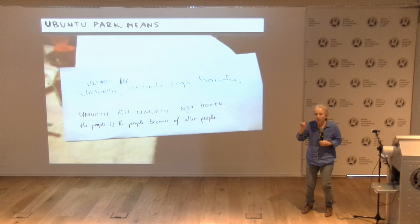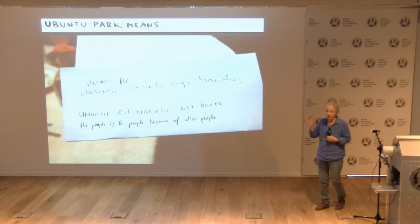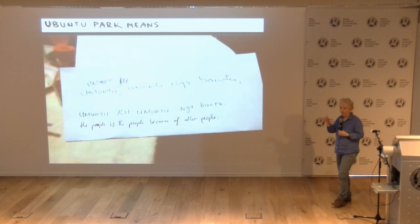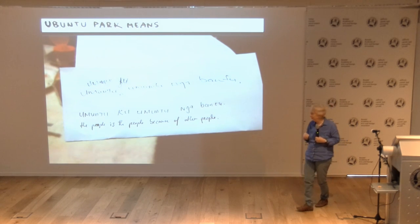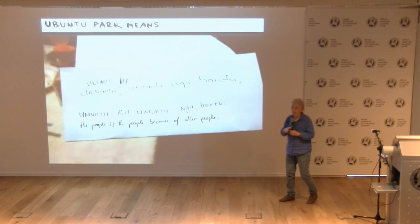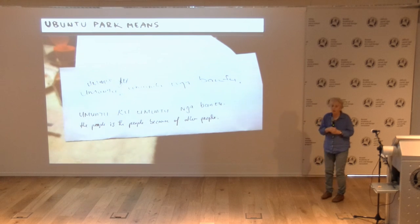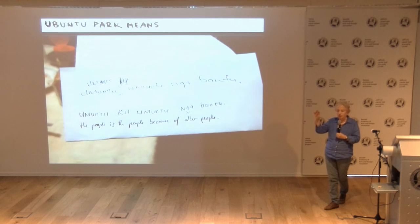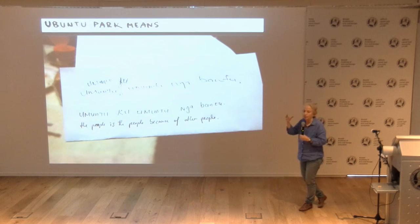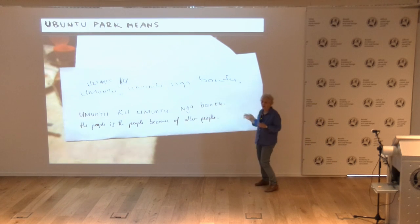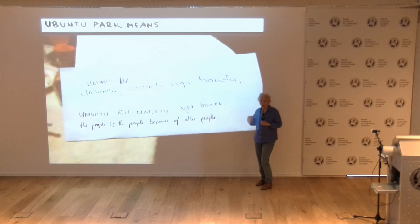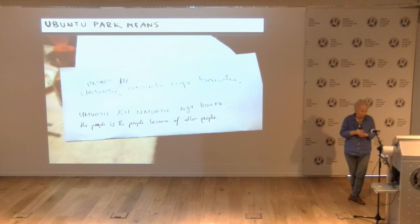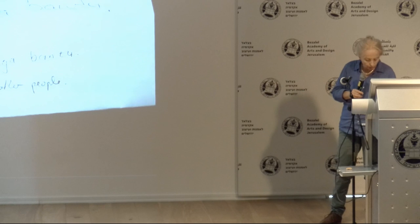Ubuntu Park refers to the traditional values of South African community. If you Google Ubuntu you get the computer operating system, but also a quote from Nelson Mandela explaining what Ubuntu means. At a time when the neighborhood was transforming into a middle-class area with many malls, the people decided to talk not about individualism but about sharing values — 'I am because of other people.' I was very happy about the name the residents chose, because it referred to traditional values rather than consumerism.